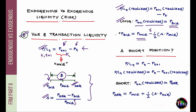For a long position, losses occur when P_(T+1) falls below P_T. When that happens and you also switch to the bid price, the bid price is further lower than the mid price — meaning losses, once you account for liquidity impact, are higher when switching from mid to bid.